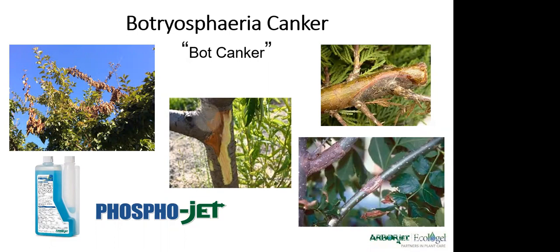You can tell pretty easily the difference besides when it's occurring in the year — if you look at the branch material, you'll actually see the cankers or lesions where the Botryspheria is occurring. That way you can identify quickly: this is what girdled and killed this branch, this is why the branch is dead and has leaves still hanging on it. For this one we use PhosphoJet, so because we're using phosphorus, we have to do it earlier — in spring — if we want to protect for late spring and early summer. If you don't know if your pear tree has fire blight and Botryspheria, you might want to do a combination application: inject both the Arbor OTC and then the PhosphoJet right after to take care of both infections.